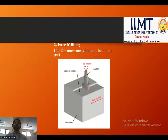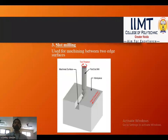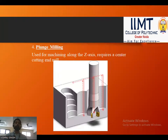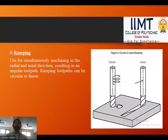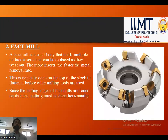Further end mill applications include face milling, used for machining the top face of a part; slot milling, used for machining between two edge surfaces; plunge milling, used for machining along the Z axis which requires a center-cutting end mill; and ramping, used for simultaneously machining in the radial and axial direction, resulting in an angular toolpath. Ramping toolpaths can be circular or linear.